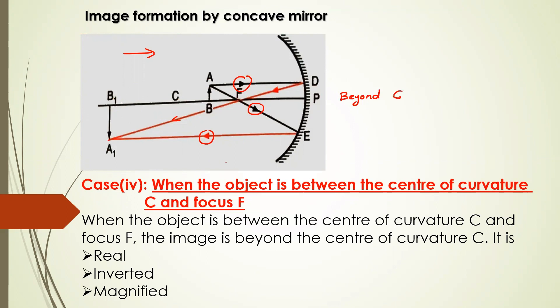If you observe the size of the image, your object size is smaller and the image size has become bigger. So the image is magnified, but it is still real and inverted. The characteristics are: real, inverted, and magnified.